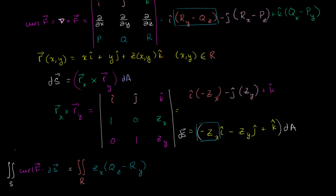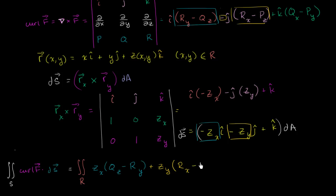Now for the j component: you have negative z sub y times the relevant part, but the two negatives cancel, giving plus z sub y — the partial of z with respect to y — times the partial of R with respect to x minus the partial of P with respect to z. That is an R right over here. Then for the k component, which is the easiest, the coefficient is just one, so it's one times the partial of Q with respect to x minus the partial of P with respect to y.